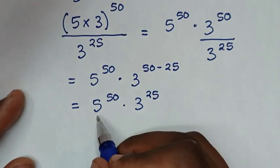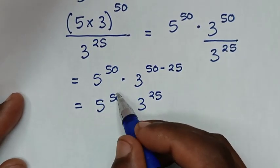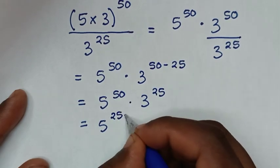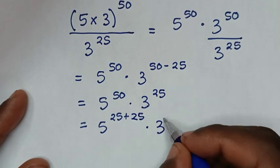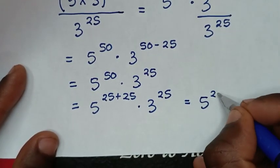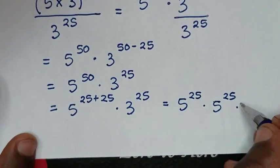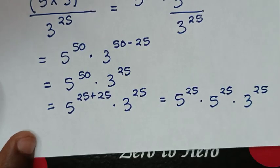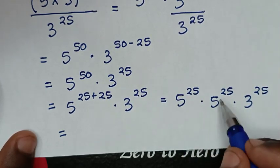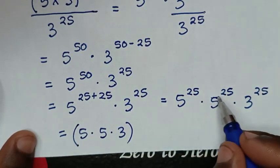For the multiplication of exponents with different bases and different powers, we make 50 a common power of 25. So 5 power of 50 is the same as 5 power of 25 plus 25, giving 5 power of 25 times 5 power of 25, then times 3 power of 25. As multiplication of exponents with the same power of 25, we multiply the bases: 5 times 5 times 3, keeping the bracket to the power of 25.